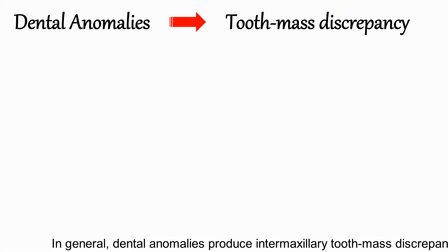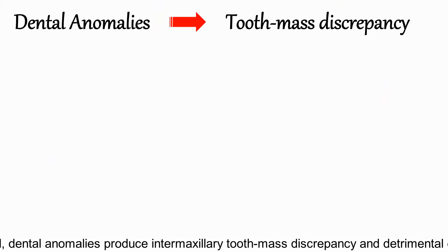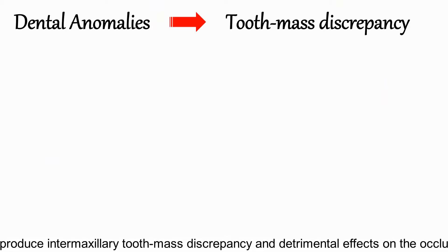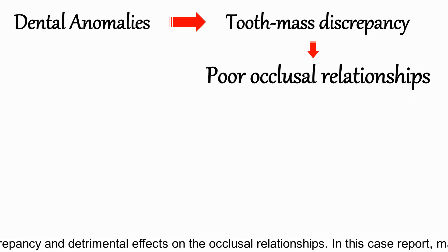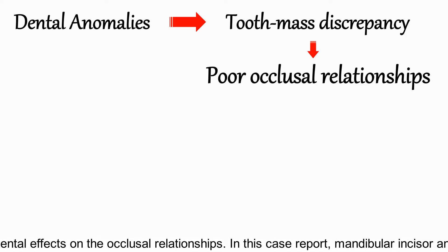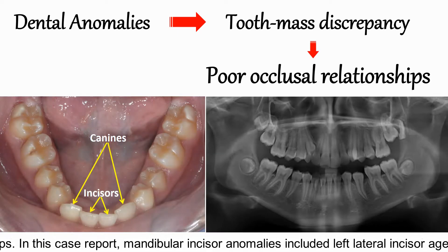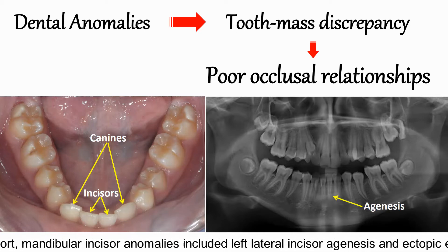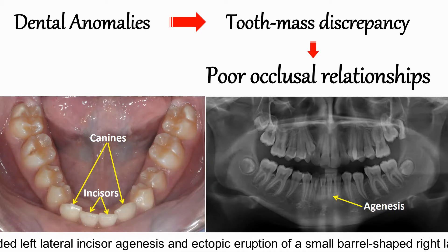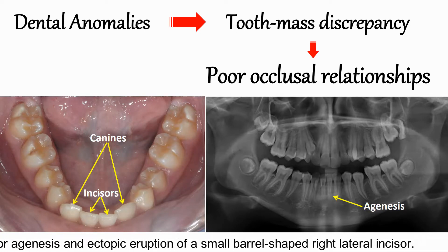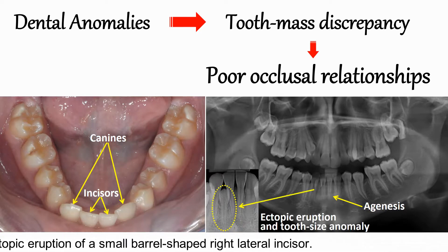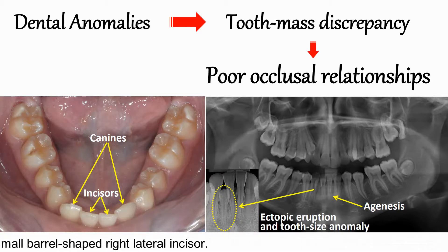In general, dental anomalies produce intermaxillary tooth mass discrepancies and detrimental effects on the occlusal relationships. In this case report, mandibular incisor anomalies include the left lateral incisor agenesis and ectopic eruption of a small peg-shaped right lateral incisor.